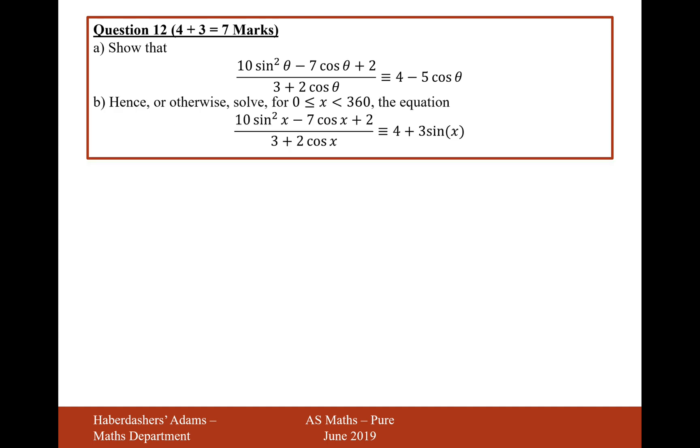OK, let's now have a go at part B. Hence or otherwise, solve for 0 to 360, the equation of this expression here equals 4 plus 3 sin x. Now, I know that this expression on the left-hand side is equal to 4 minus 5 cos theta, so I'll write that down because it says it's equal to it at the top.